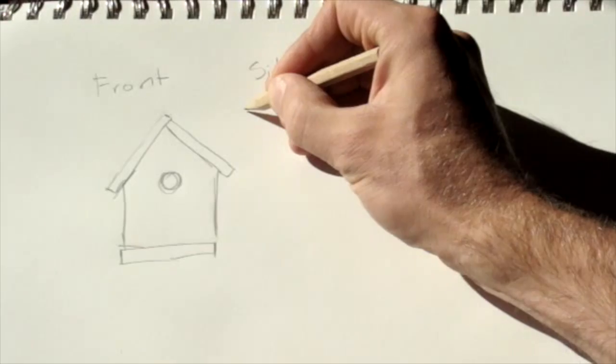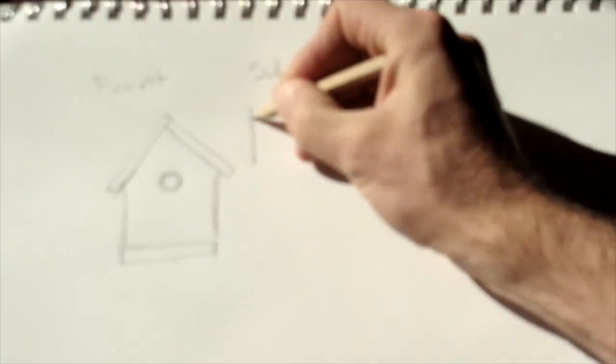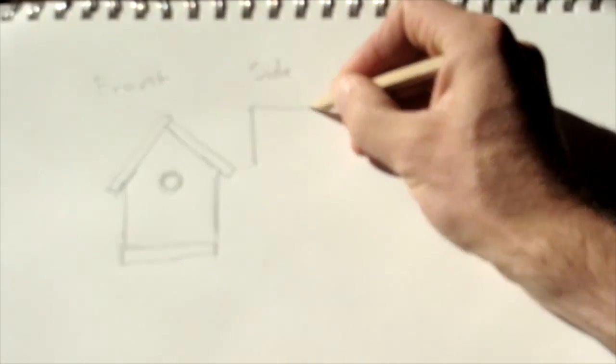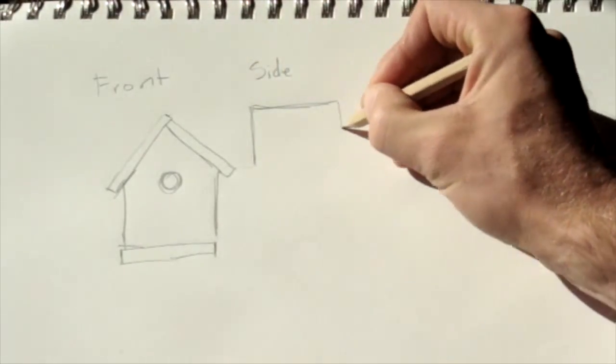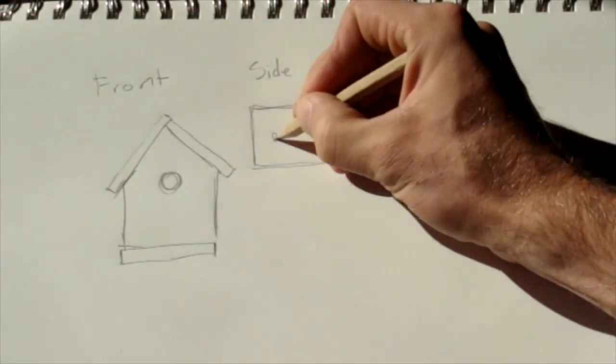All right, now I'm going to draw the side view. See how I connect and look at the front view to give me an idea of how tall things should be in the side view. Use that front view as a guide.